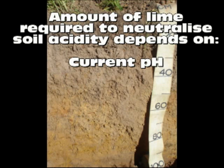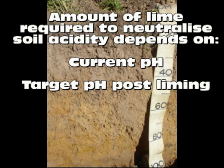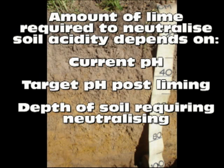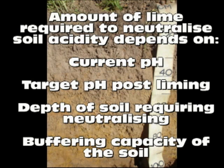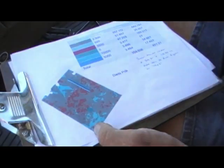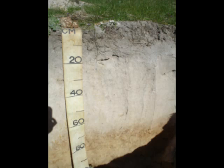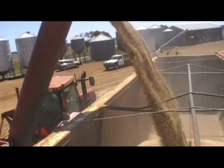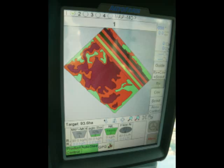The amount of lime required to neutralise soil acidity is a combination of the current pH, the target pH, the depth of soil needing the lime, and the buffering capacity of the soil. This means that the amount of lime needed to fix acidity varies within a paddock because the initial pH, the productivity, the leaching potential, and buffering capacity vary across the paddock.